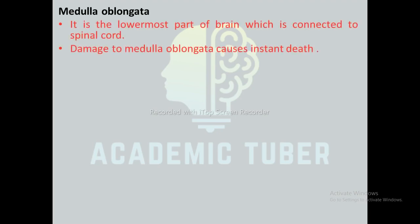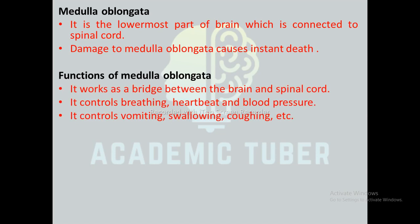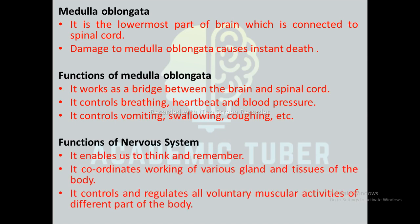The medulla oblongata is the lowermost part of the brain, connected to the spinal cord. Damage to the medulla oblongata causes instant death. Its functions include acting as a bridge between the brain and spinal cord, and controlling breathing, heartbeat, blood pressure, vomiting, swallowing, and coughing. The nervous system enables us to think and remember, coordinates glands and tissues, and controls voluntary muscular activities.